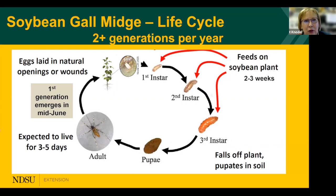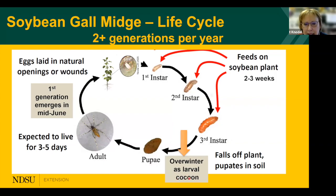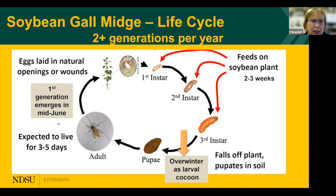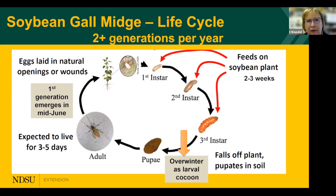Soybean gall midge has two generations per year. Starting with the overwintering larval cocoon in the soil, they go through a short pupal stage as temperatures warm up in spring, then the adult emerges. It only lives three to five days, so unless you're emergence-trapping with cages for research, you probably won't see the adult. In Minnesota, it usually emerges mid to late June. The adult mates and the female lays eggs in wounds or openings along the stem of the soybean. Eggs are very small and require magnification to see.